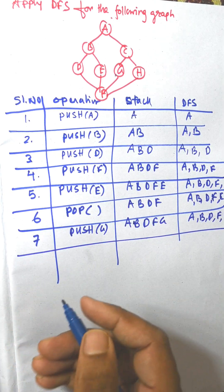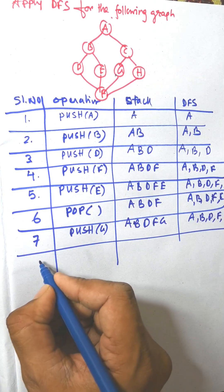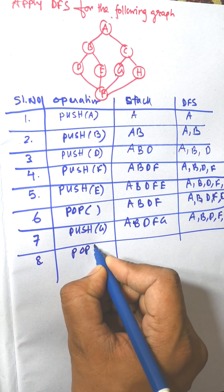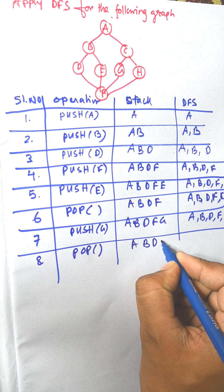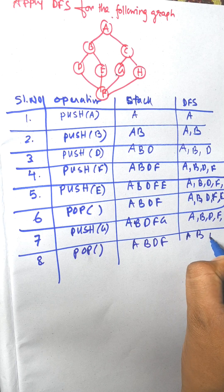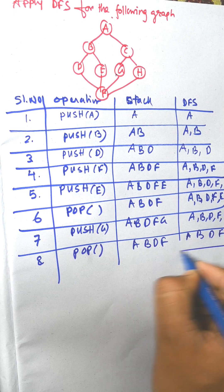From G, the neighbor is already visited, so we need to perform a pop operation. Pop gives us stack A, B, D, F. The visited list answer so far is A, B, D, F, E, G.